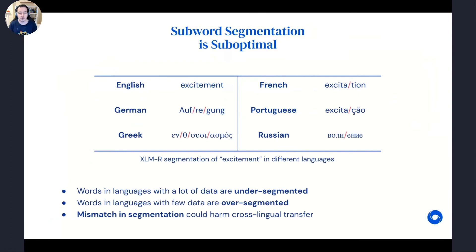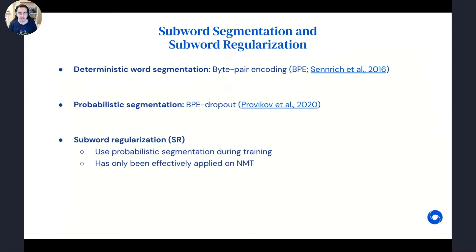This mismatch in segmentation across different languages makes it very difficult for the model to properly transfer token-level information. For languages among the hundred pre-training languages that have much fewer data, some subwords might consist of even single characters or character n-grams, making it very hard for the model to learn reliable embeddings. To ameliorate this, one area actively researched in machine translation is subword segmentation. On one hand we have deterministic segmentation algorithms like BPE, standard in models like BERT; on the other hand there are probabilistic segmentation methods like BPE-dropout.